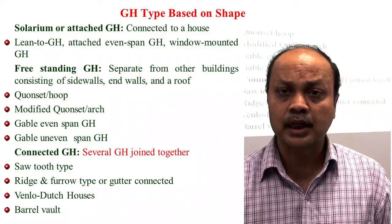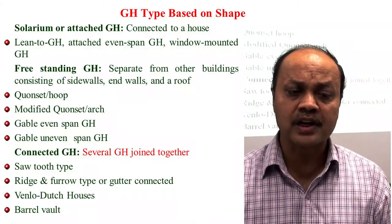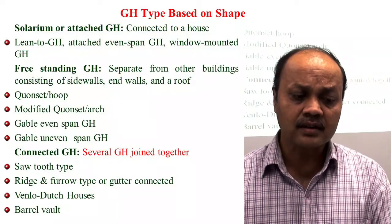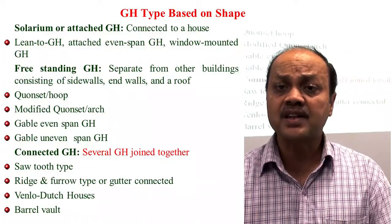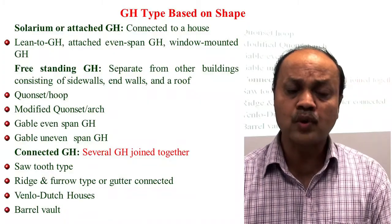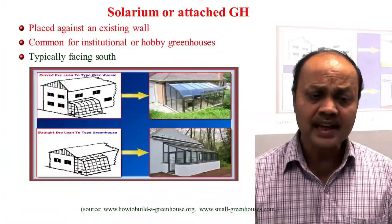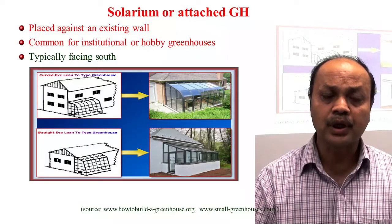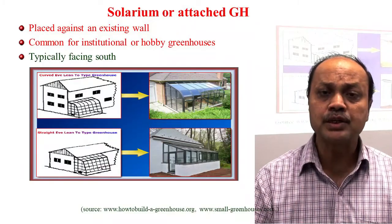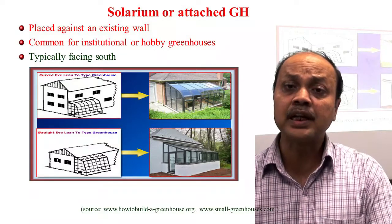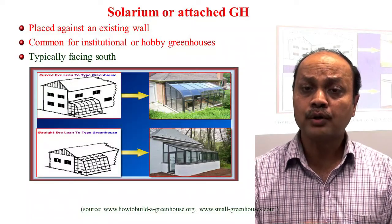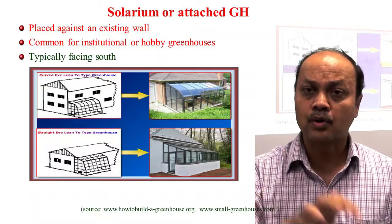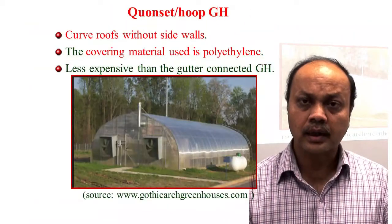In terms of shape, three broad categories exist: solarium or attached greenhouse, free-standing greenhouse, and connected greenhouse. The solarium — also called lean-to greenhouse — is attached to an existing wall and is commonly used for institutional or hobby purposes. Sometimes it is used for heating the house rather than for crop cultivation.